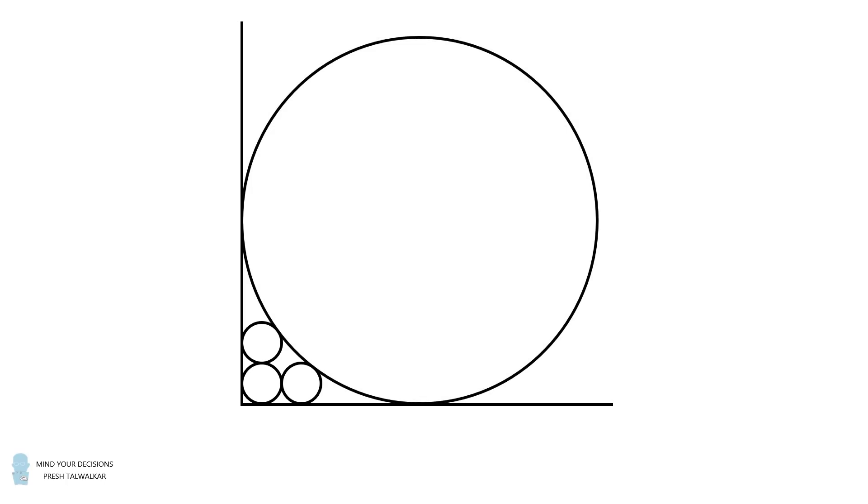Now construct a fourth circle that's tangent to both line segments and tangent to the second and third circles. If the radius of this large circle is equal to one, what is the radius of each small circle?